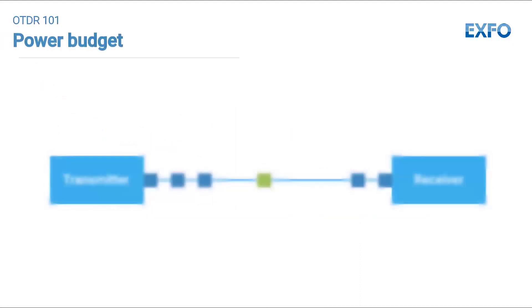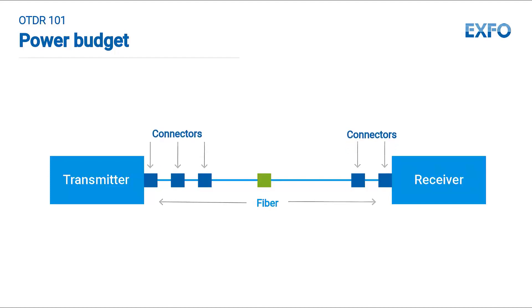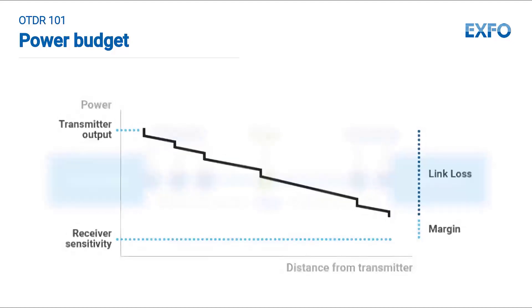An OTDR characterizes a link, making sure that every element is within the tolerances required by the network operator. Whether in construction or troubleshooting, one needs to ensure the link meets the expected level of performance.